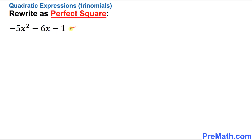We set it equal to zero — we are just pretending that it is equal to zero. This trick is going to make our job a lot easier. The next step is to make sure that you have only x variables on the left hand side. That means this negative one, which is a constant, must go on the other side. So I can write: negative 5x² minus 6x equals positive 1.